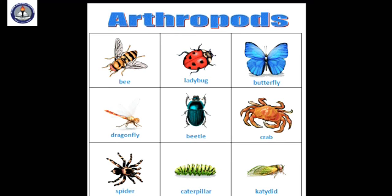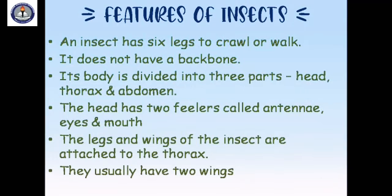What are the features of insects? An insect has six legs to crawl or walk. It does not have a backbone. Its body is divided into three parts: head, thorax, and abdomen. The head has two feelers called antennae, eyes, and a mouth. The legs and wings of the insect are attached to the thorax.